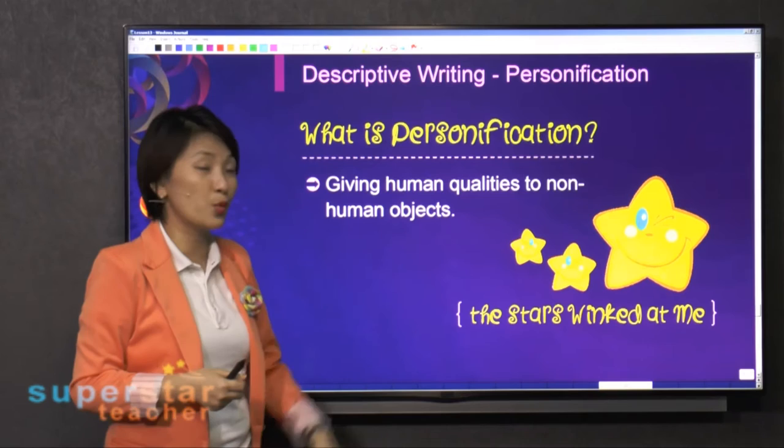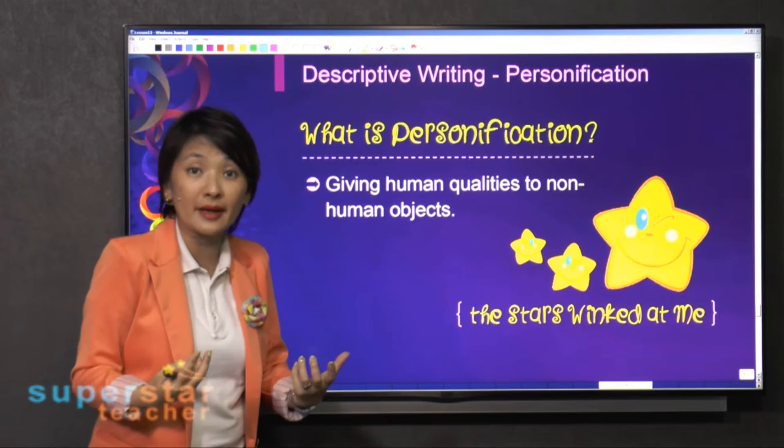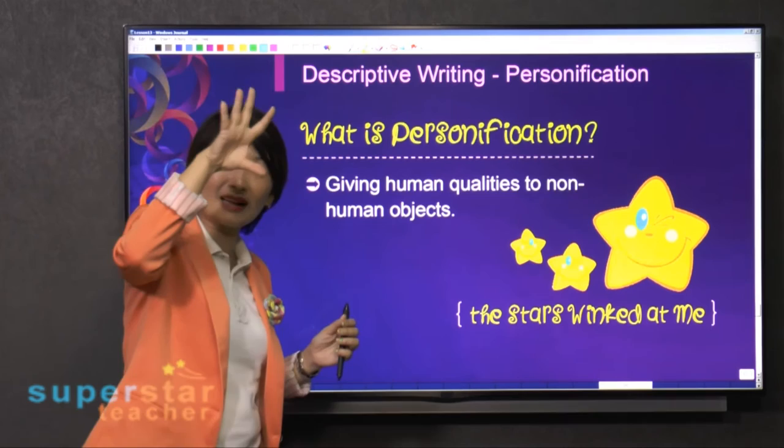So, like the stars winked at me. Do the stars have human qualities? Is it a human object? It's non-living. But the stars can wink. What does that mean? It means the stars are actually sparkling in the sky — like it looks as though they are winking at us.